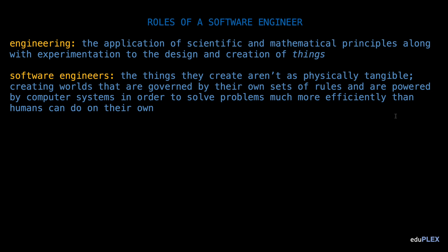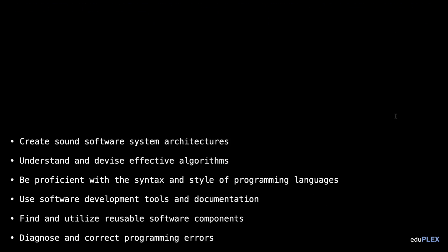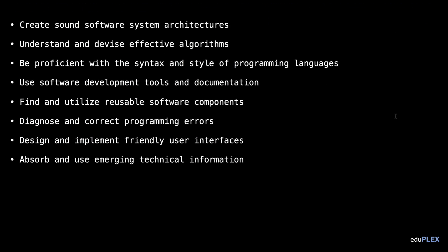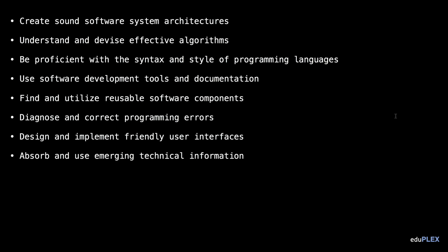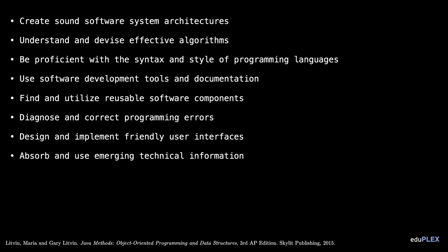Here we have a list of the roles a software engineer has to be able to assume in order to properly complete his or her job. This list is taken from the Java Methods textbook by Maria and Gary Litvin, and it really does a good job at putting into perspective the scope of a career in software engineering. Let's go through them one by one and get a better understanding of what each component really means.